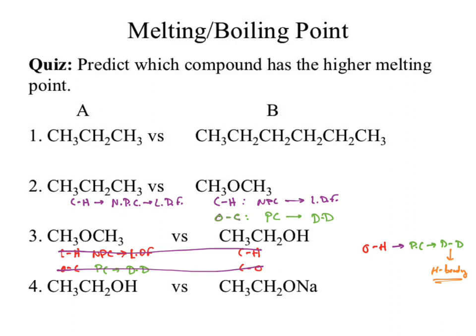When we look at 2A, there's only one force — London dispersion. For 2B, we have two forces. Which is going to be more important to how it interacts with other molecules? The OC bond, which leads to the dipole-dipole force. So we're comparing a dipole-dipole force to a London dispersion force. Which is stronger? Dipole-dipole. Which means I have to put more energy into 2B to cause it to melt — 2B has the higher melting point or boiling point.